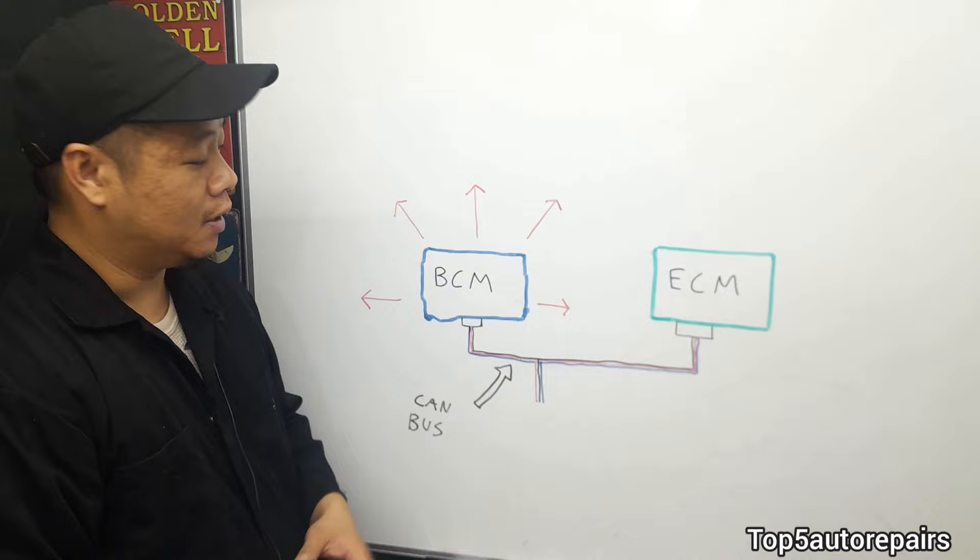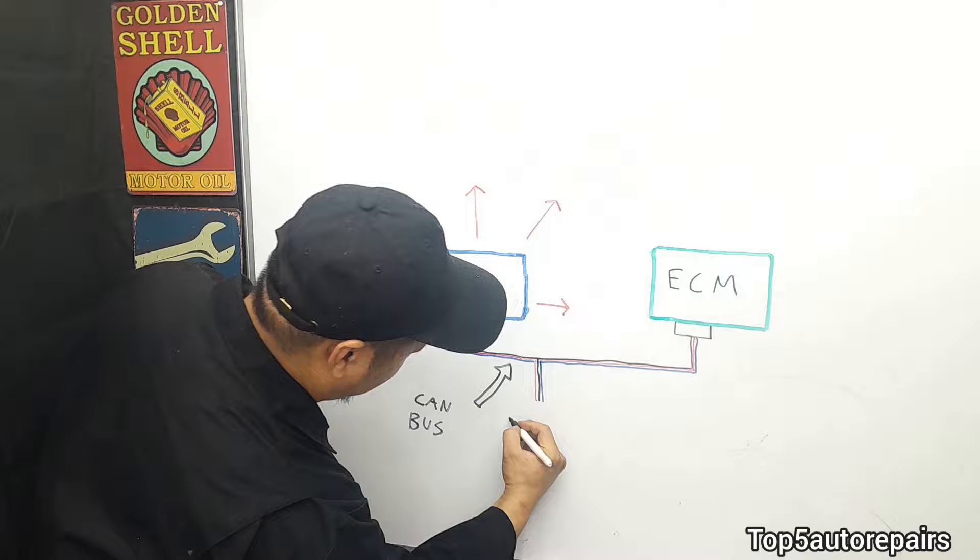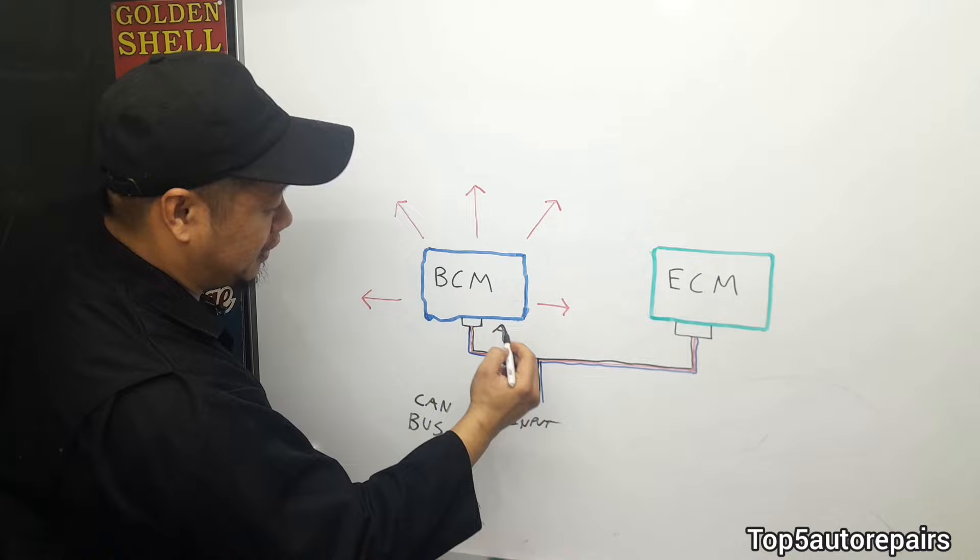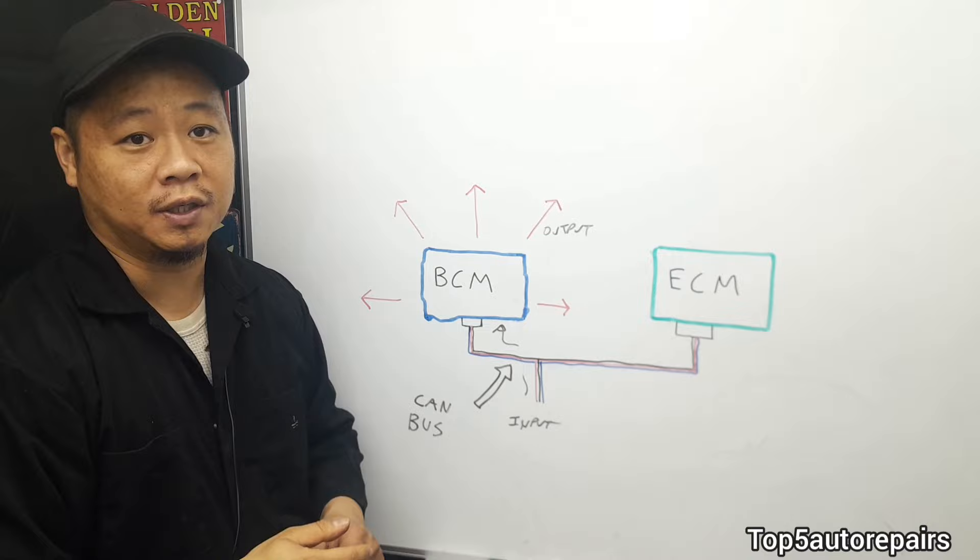And for the body control module to work, it's going to need an input. And this input will send information straight to the BCM and the BCM is going to send out an output to control whatever components it is controlling.